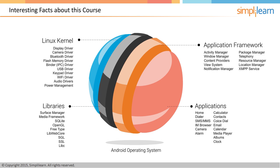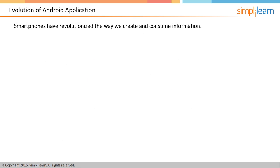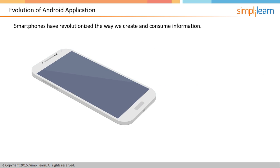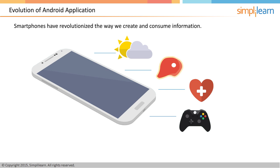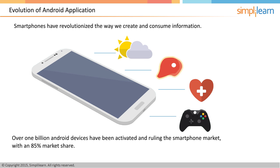How did Android application development evolve? Smartphones have revolutionized the way we create and consume information. Today, people can barely recall life before mobile apps. From checking the weather the minute you wake up, to finding a recipe for pot roast, from getting a doctor on demand to playing a game while waiting for the bus, apps have become a way of life. Be it a washing machine or a quadcopter, Android has become integral to everyday living. Over 1 billion Android devices have been activated, and Android enjoys an 85% market share.